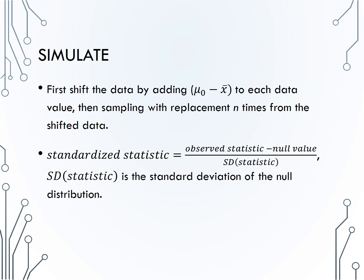If we add the null value minus the sample mean to each data value, the mean of these shifted data will be the null value. Shifting the data will not change the spread of the sample, so we will still have an accurate idea about the standard deviation of the population.